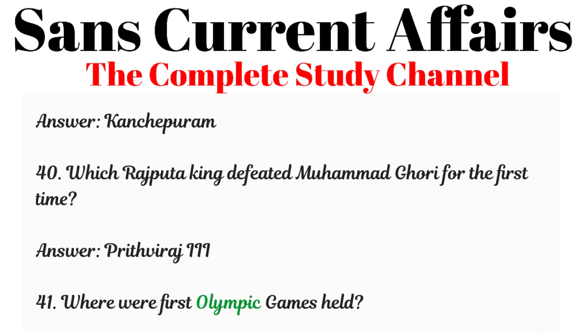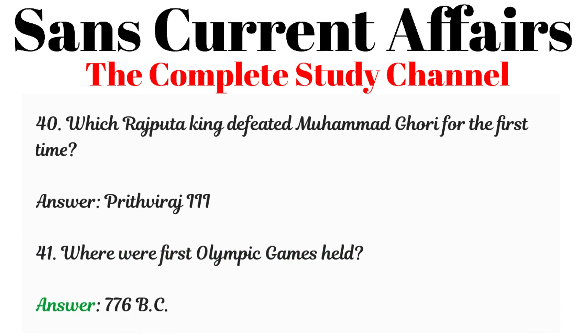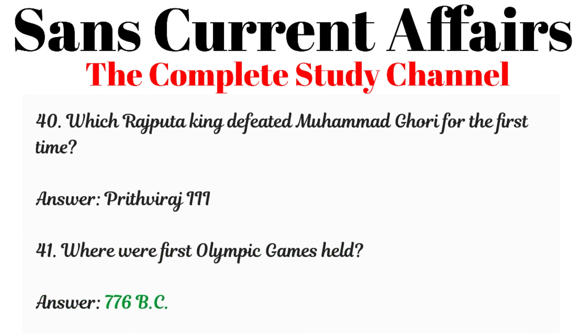Question 41: Where were the first Olympic games held? Answer: 776 BC.